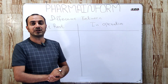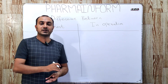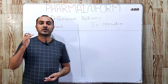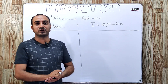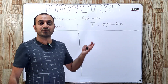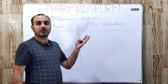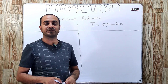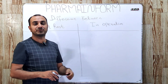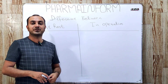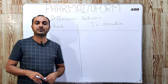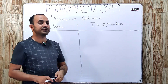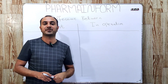Many of you are familiar with clean rooms — what they are, how they are classified, and the criteria for clean room classification. If you do not know about clean rooms, the link to a video on clean rooms and their classification is given in the description. In this video, we will only discuss the difference between at rest and in operation.